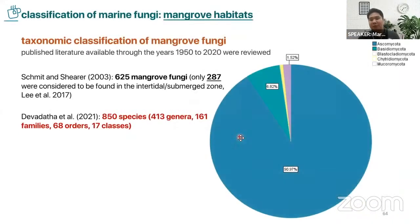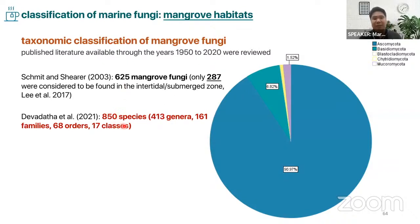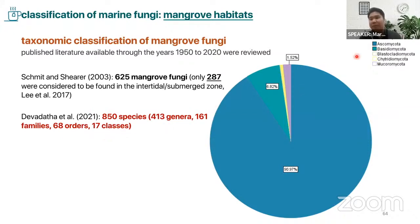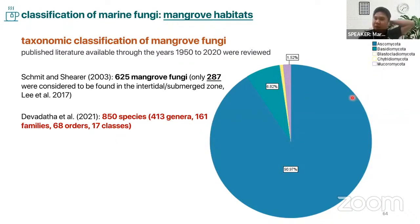For the taxonomic classification of mangrove fungi, from 625 we have now listed 850 species of mangrove fungi, under 413 genera, 161 families, and 17 classes. But most of them are composed of Ascomycota. Very few are from the basal group — maybe from mucor, only one species — very few, less than 5 or 10.